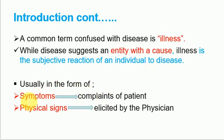Illness usually manifests in the form of symptoms and physical signs. Symptoms are complaints of a patient — they are felt by the patient. For example, headache, nausea — these are felt by the patient. But physical signs are signs that are elicited by a physician — they are seen by a physician. For example, if someone is infected with Plasmodium falciparum and has malaria, a physical sign would be pallor of the conjunctival membrane, seen by the doctor. Physical signs also include edema or obesity.